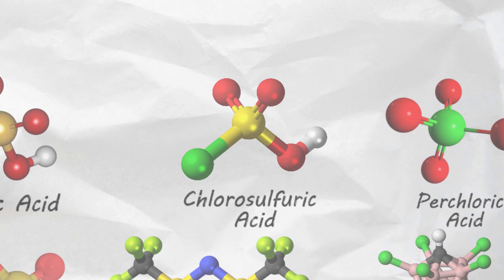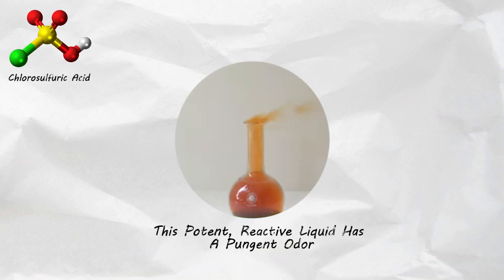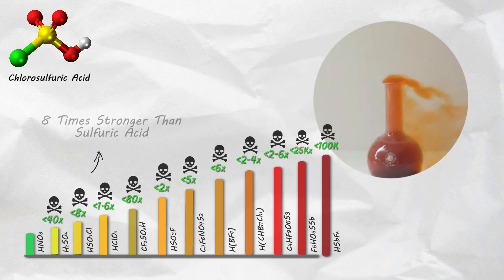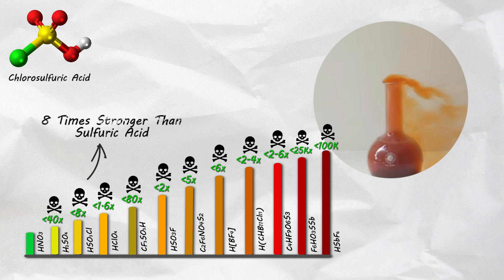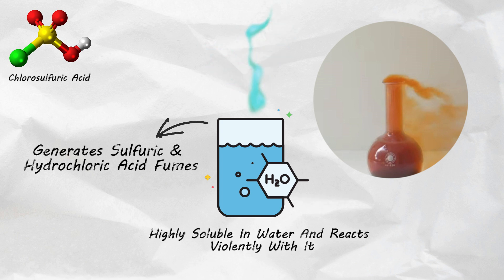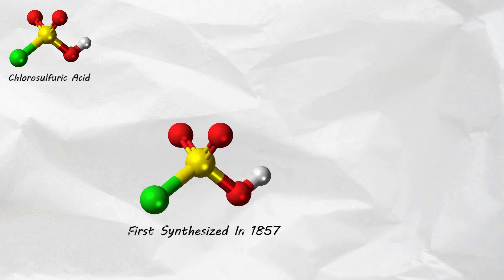Chlorosulfuric acid. This potent and reactive liquid comes with a pungent odor, typically clear to pale yellow in appearance. Chlorosulfuric acid is approximately 8 times stronger than sulfuric acid. Its properties include high solubility in water and a strong tendency to react violently with it, generating sulfuric and hydrochloric acid fumes.